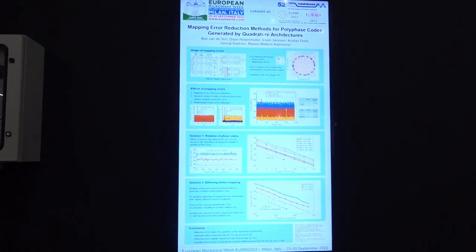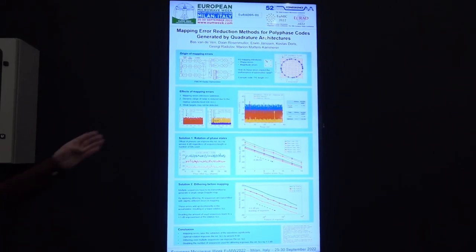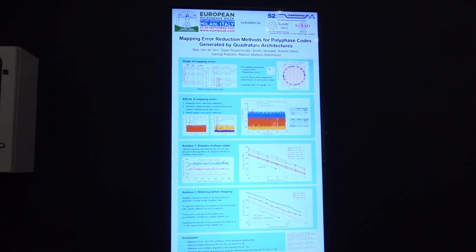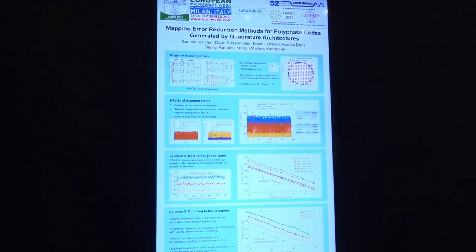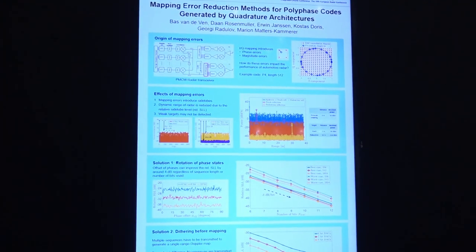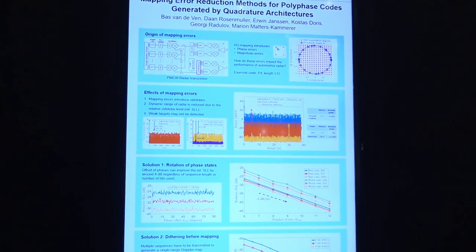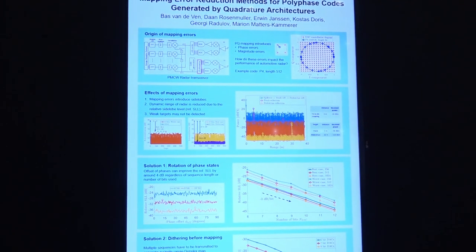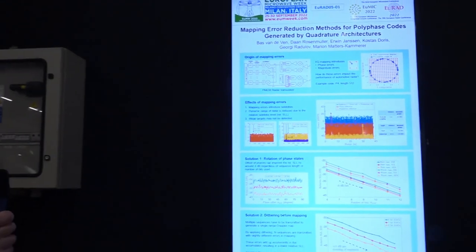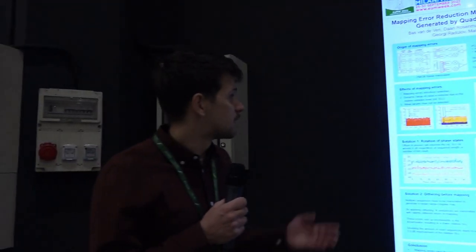As a result, the dynamic range of the radar is reduced, and as a consequence, weak targets may not be detected anymore. So this relative side level has to be decreased somehow.